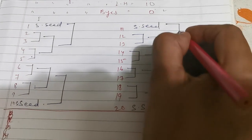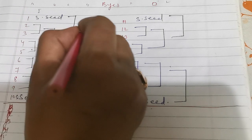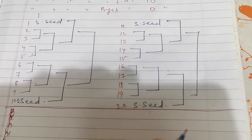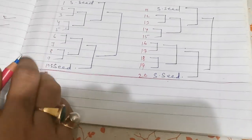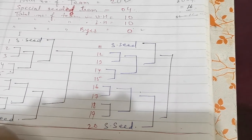This seeded team will play with this, and this is the quarter final of the tournament. Now this is the semi-final, and after that these two will play the final. So in this way we have to make the special seeding tournament.